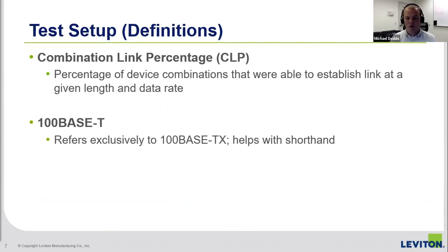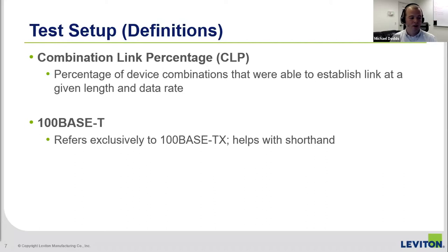Now for a few operational definitions. There's a phrase I'll use a lot called combination link percentage, or CLP. It's the percentage of device combinations that were able to establish link at a given length and data rate. Another nomenclature note: we use 100BaseT in this presentation, but that refers exclusively to 100BaseTX — mainly just to help with shorthand.